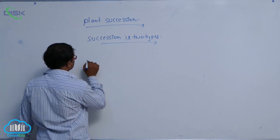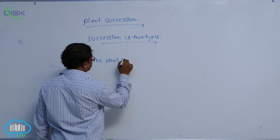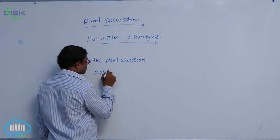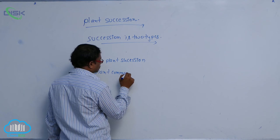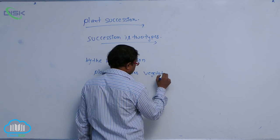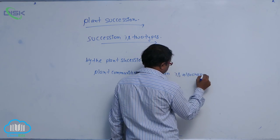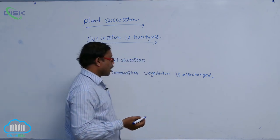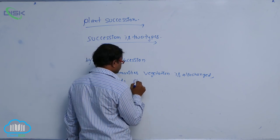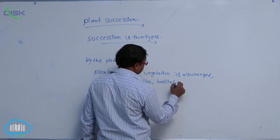Next, by plant succession, plant communities change. Vegetation is also changed. Food, shelter, and habitat also change.